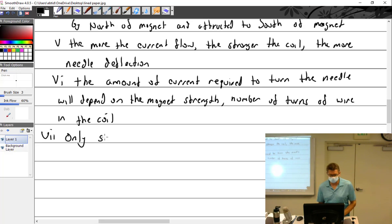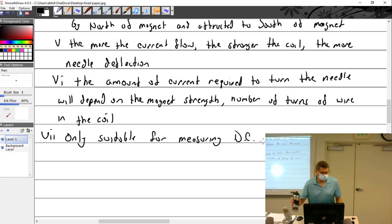Only suitable for measuring DC, which stands for direct current. Why do you suppose it's only good for DC?